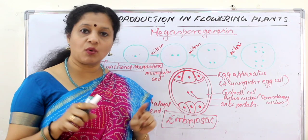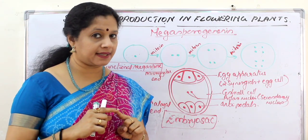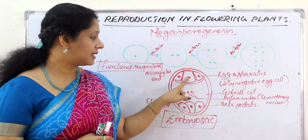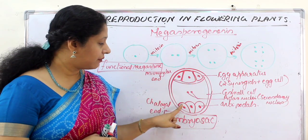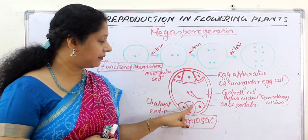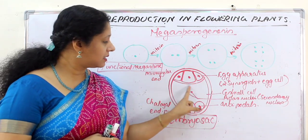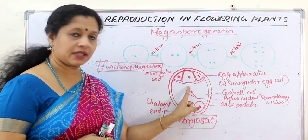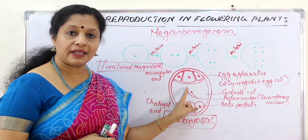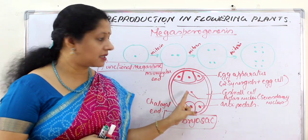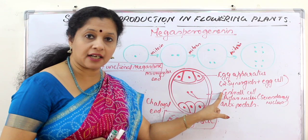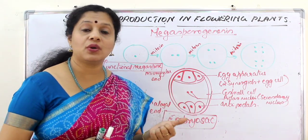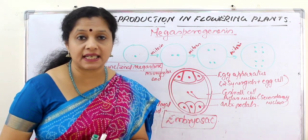How many cells are there? A cell is only counted when there is a wall around the nucleus. So at the micropylar end we have three cells, at the chalazal end three more cells — that is six. The central cell has walls around it, making it the seventh cell. Therefore, the embryo sac is an eight-nucleate, seven-cell structure.